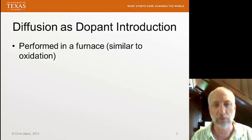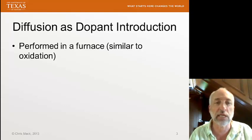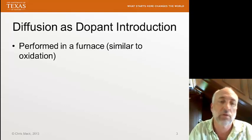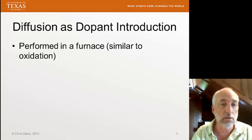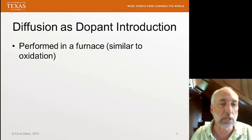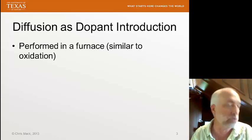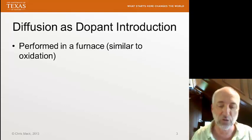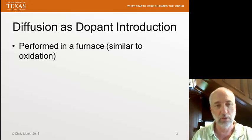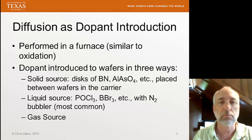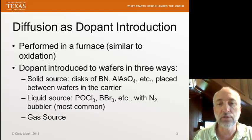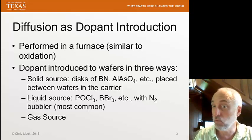So essentially we dedicate furnaces to particular functions. Once a furnace tube is dedicated to oxidation, that's all it's used for. And once it's dedicated to boron dopant introduction and diffusion, that's all that tube is used for. But the furnaces are essentially the same. This dopant is introduced to the wafers in one of three ways.